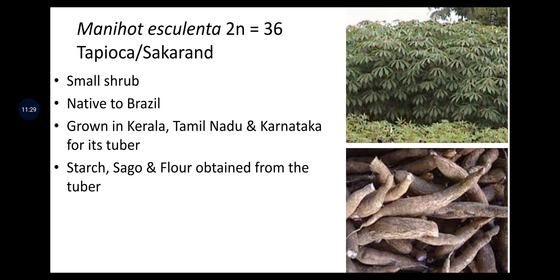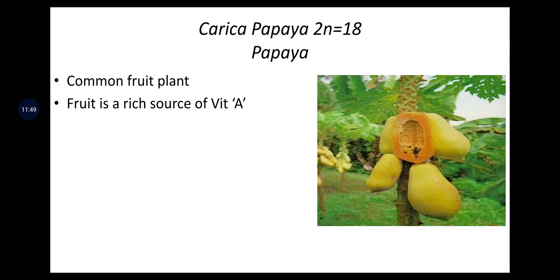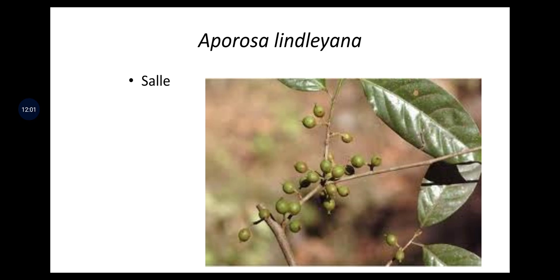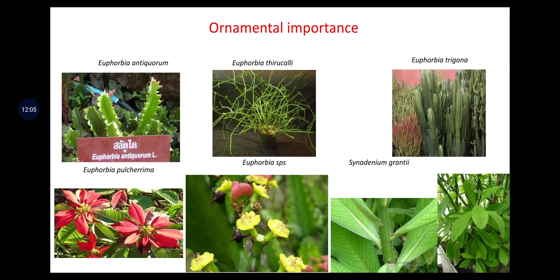Manihot esculenta (2n = 36) is tapioca or sakarand — a small shrub like castor, native to Brazil, grown in Kerala, Tamil Nadu and Karnataka for its tubers. Starch, sago and flour are obtained from the tuber. Carica papaya (2n = 18) is a common fruit and rich source of vitamin A. Baliospermum montanum is the danti plant. Aporose lindleyana is the sale plant. Other ornamentally important plants include Euphorbia antiquorum (adapted to desert conditions), Euphorbia tirucalli, Euphorbia trigona, Euphorbia pulcherrima, other Euphorbia species, and Codiaeum variegatum.